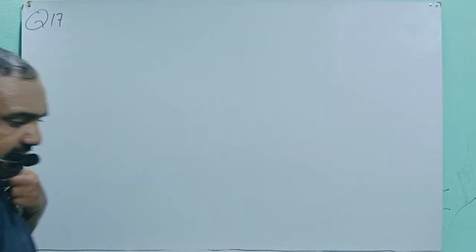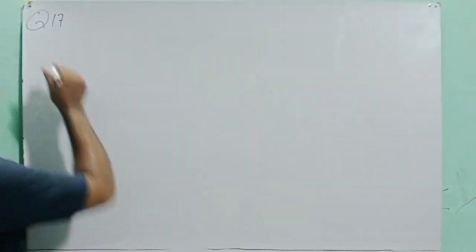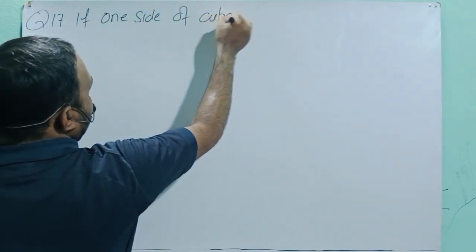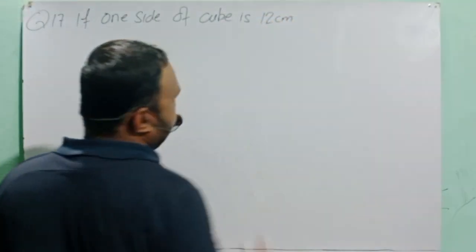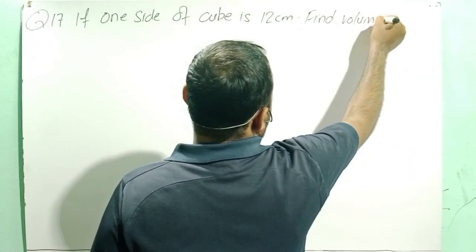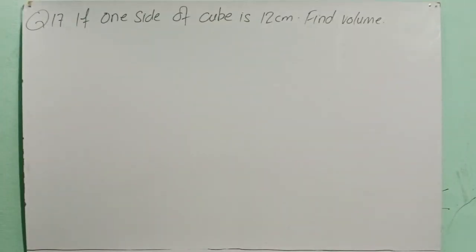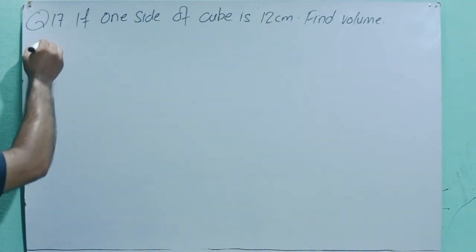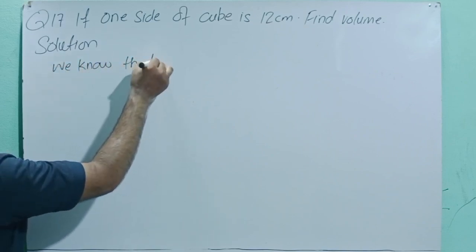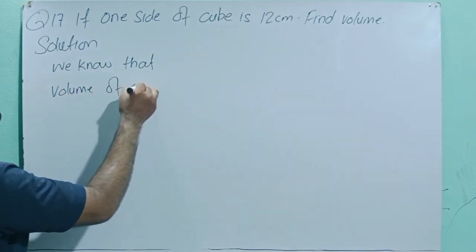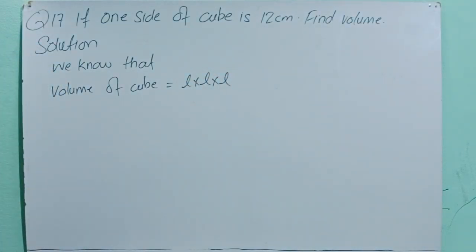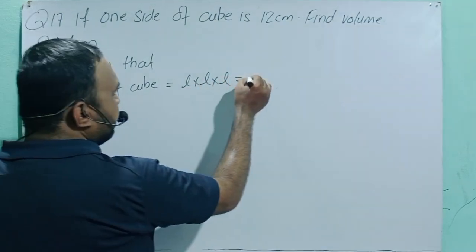Question number 17. The statement is: if one side of a cube is 12 centimeters, find the volume. We know that the volume of a cube equals length × length × length, which equals L cubed.